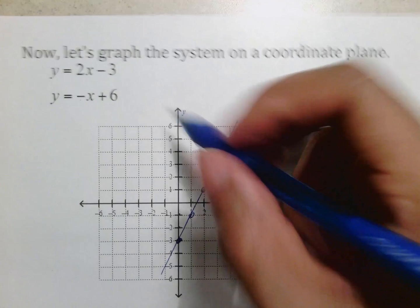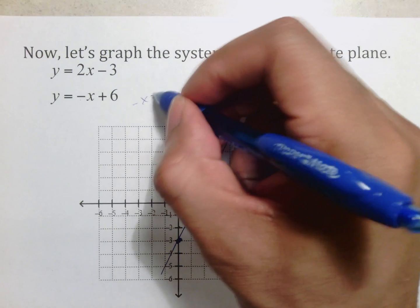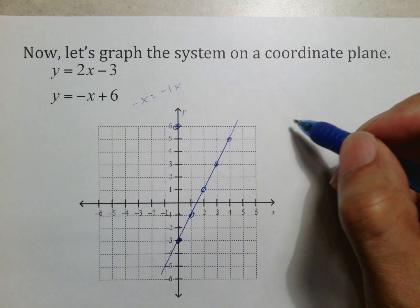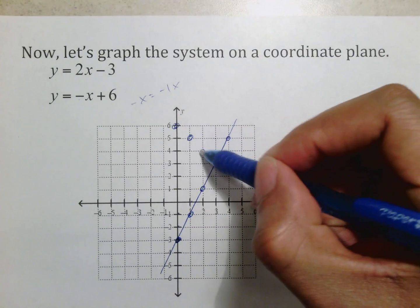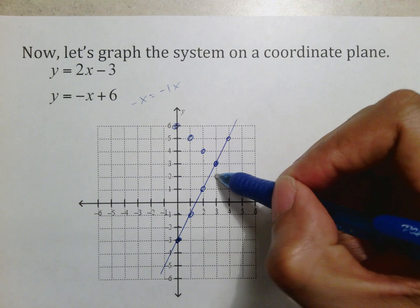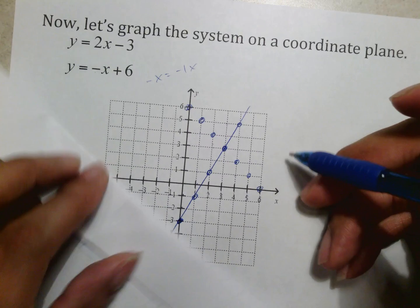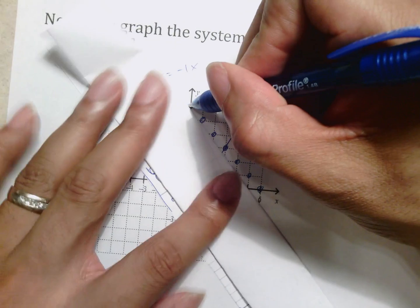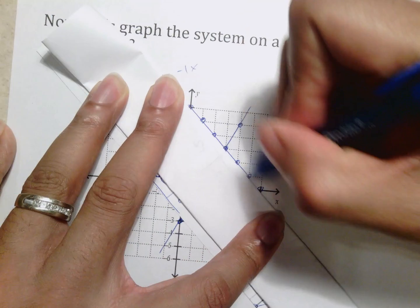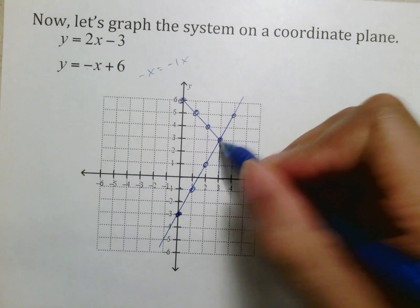The other graph tells me to go up 6 and then from there to go down, because remember that negative x is the same as negative 1x. So it's telling me to go down 1 over 1, down 1 over 1. And notice down 1 over 1 leads me to a dot that they have in common. Down 1 over 1, down 1 over 1, down 1 over 1. And when you draw these lines, you recognize that these two lines cross at 3, 3.